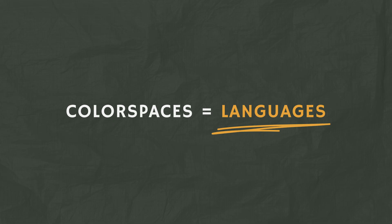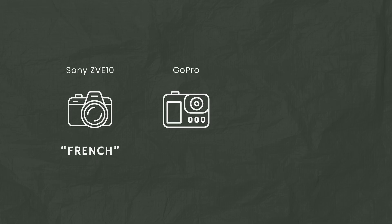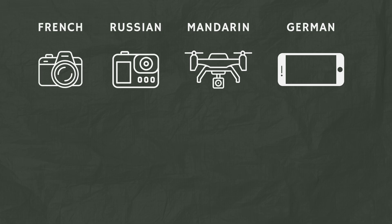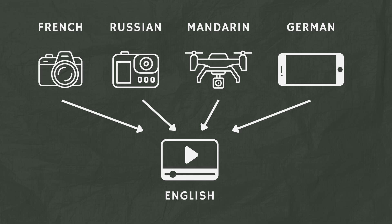The way I like to think of these different color spaces is like different languages. Each camera speaks its own language. Something like the Sony camera I'm shooting on right now uses S-Log — let's call that French. A GoPro shoots in its own color space, we'll call that Russian. A DJI drone shoots in D-Log — we'll call that Mandarin. So all of these different cameras are speaking their own languages. What we ultimately want to achieve is to translate all of these cameras so they're in English, so that when our audience is watching it, it's one cohesive language and one cohesive look.